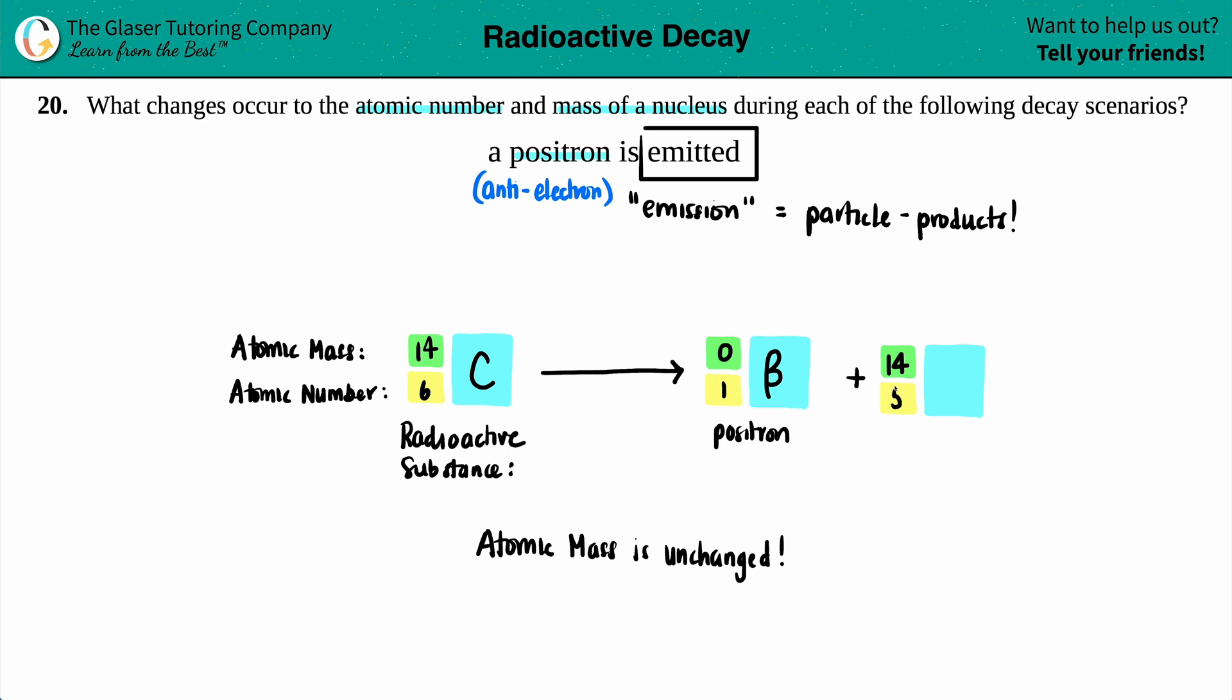And then you could always look on the periodic table to find out whose atomic number is five. It's got to be boron's. But then what happened to your atomic number? It dropped from a six to a five because the positron takes one. So we'll say that our atomic number decreases by one.